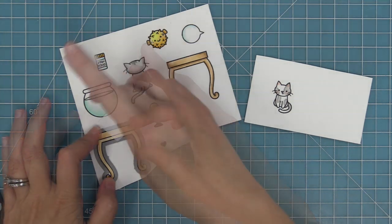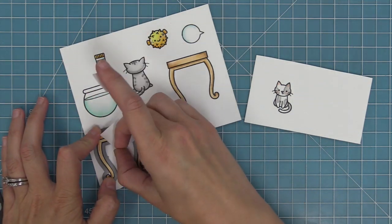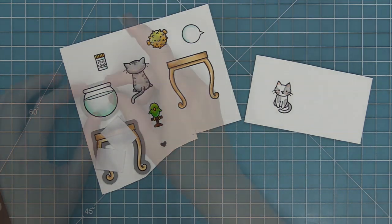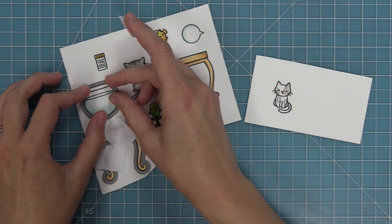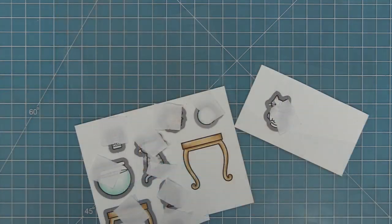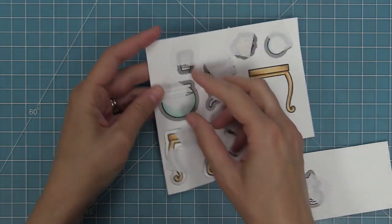Now we're going to be taking the coordinating dies and we're going to line those up with our stamped images and hold them in place with some Post-it note tape. That's my favorite low-tack tape for holding dies in place. We'll line all of these up and then we can run those through our die cut machine and we'll have perfectly cut out images ready to create our scene.